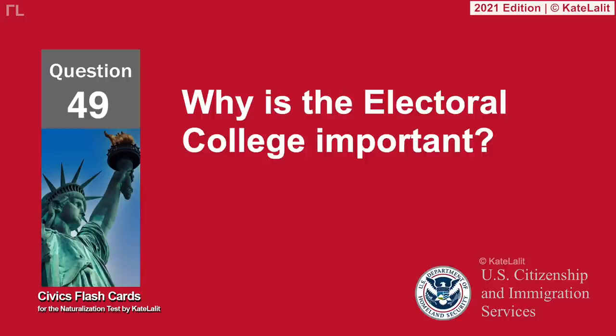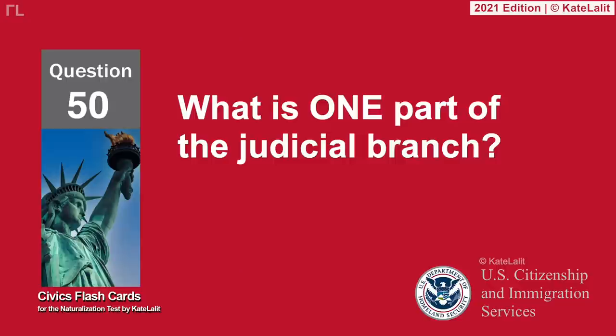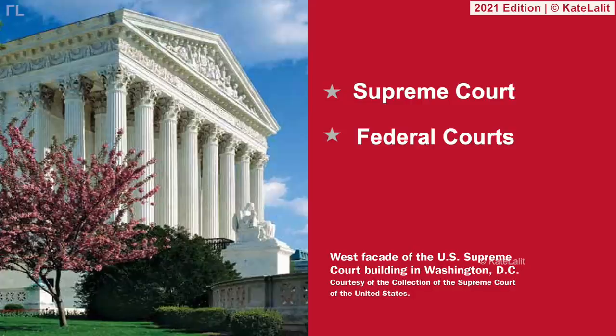Why is the Electoral College important? It decides who is elected President. It provides a compromise between the popular election of the President and Congressional selection. What is one part of the Judicial Branch? Supreme Court. Federal Courts.